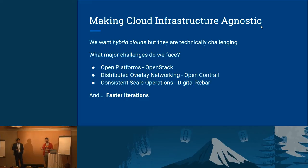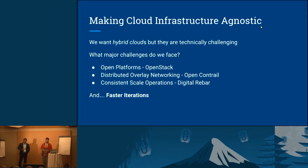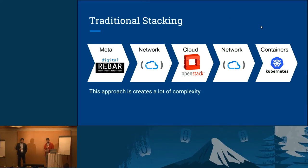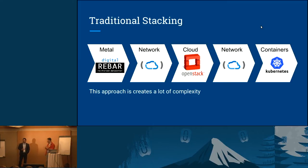We need open platforms — we have those. We need distributed overlay networking — we have that. We have consistent scale operations. One of the things we need to pull all this together is to learn faster. These are complex infrastructures. This is a very simple description showing the layers: from metal, your first network, your cloud network, your container network, your container infrastructure — and we haven't even gotten to your own application yet. So it's a lot of stacks, a lot of things that have to work together, and then you multiply this across 100 nodes or 1,000 nodes. It's a big deal.